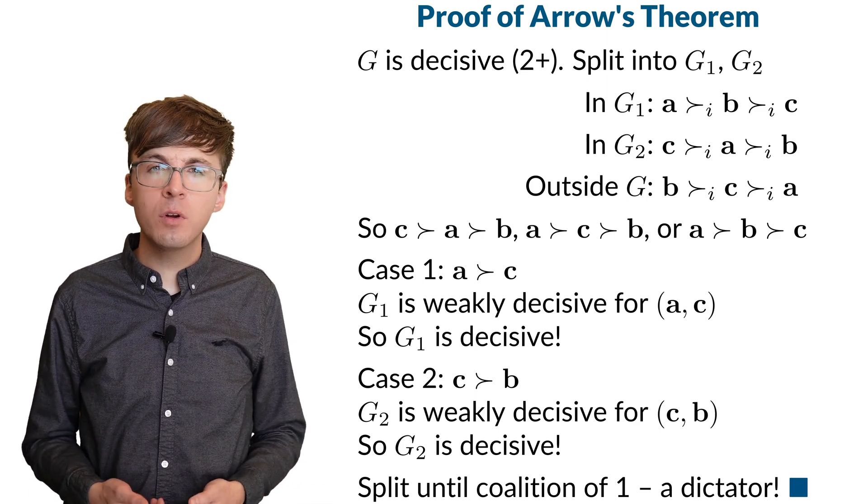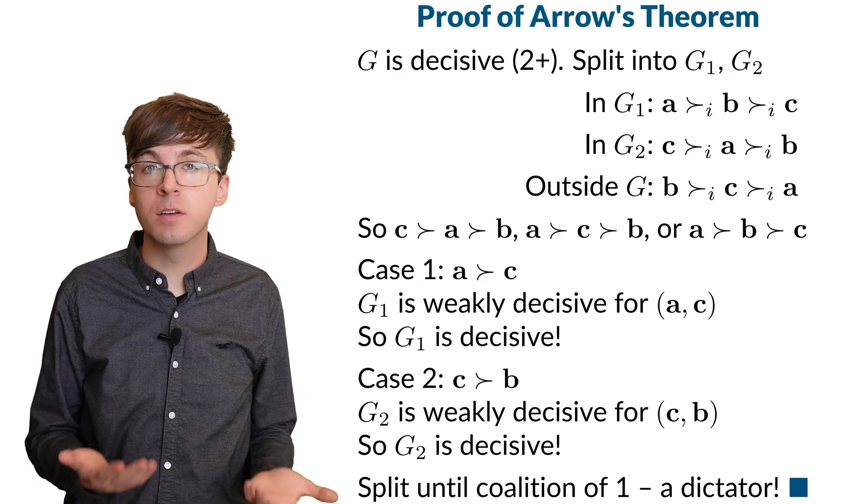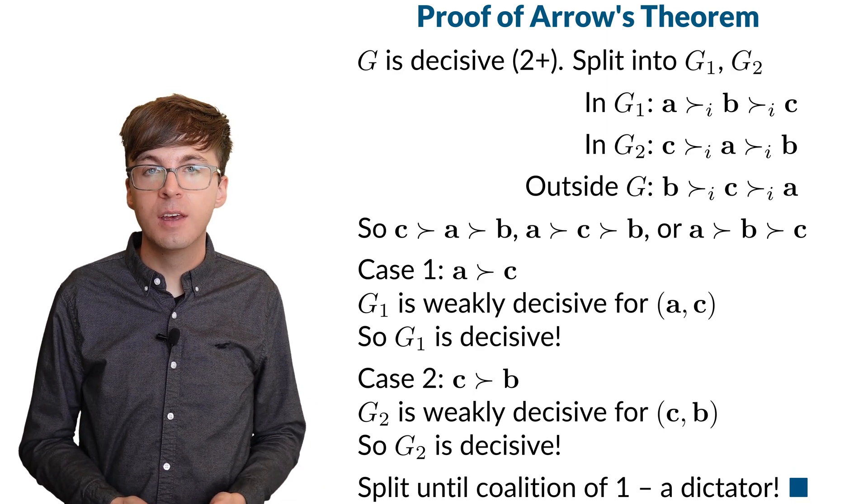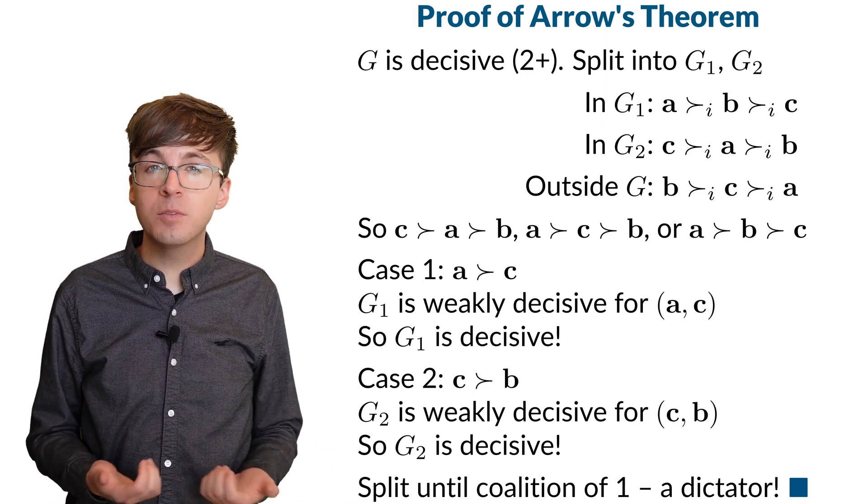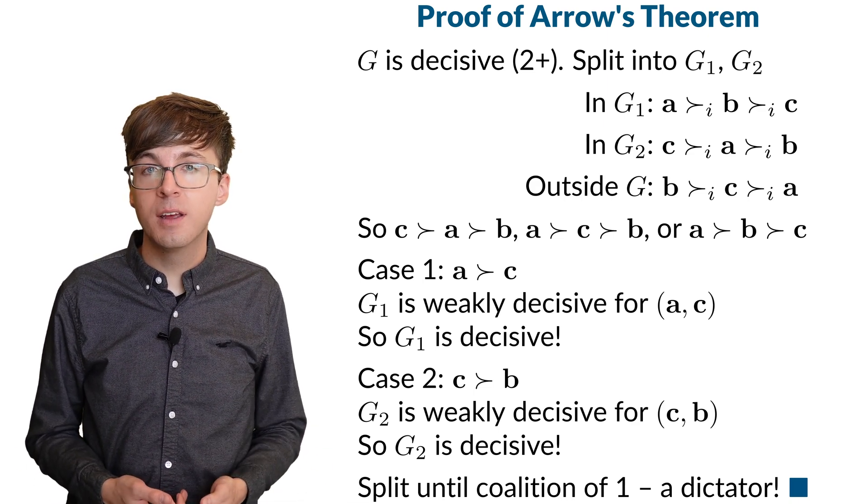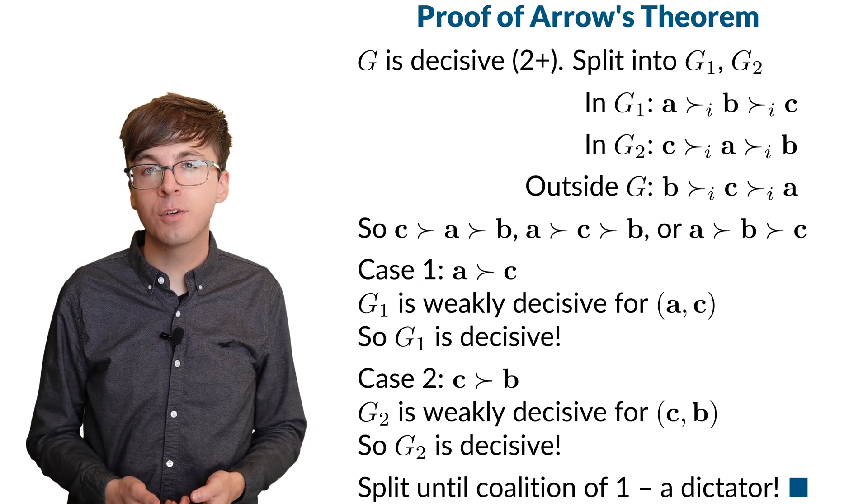But it's also important to remember that Arrow's Theorem doesn't say how often a voting method will be irrational. Some may fail less often than others. And Arrow's Theorem doesn't apply to other types of voting, like if everyone gives a numerical score to each alternative.